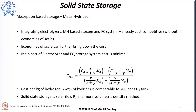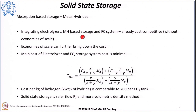For absorption-based metal hydride storage systems, these are currently cost competitive with 700-bar compressed hydrogen tanks, even without large-scale manufacturing or economies of scale. In combined systems integrating an electrolyzer with metal hydride-based hydrogen storage and a fuel cell, the major cost components are the electrolyzer and fuel cell. The metal hydride storage system cost itself is minimal. If economies of scale are considered, the cost will further come down.